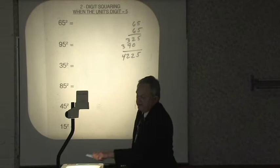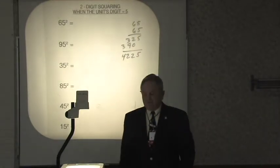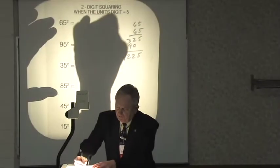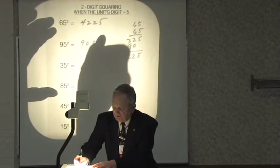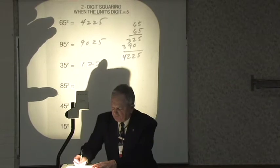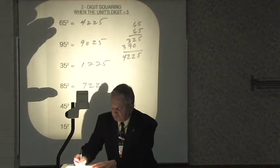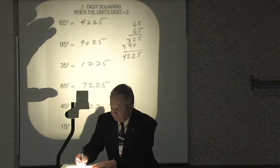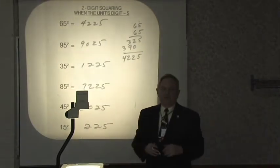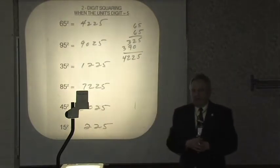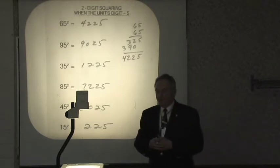If we had any of these problems on that mental competition test, here's what we would be expected to do. 4,225, 9,025, 1,225, 7,225, 2,025, 225. I didn't have any of those memorized. I just did them. I actually computed them as I was going through them.